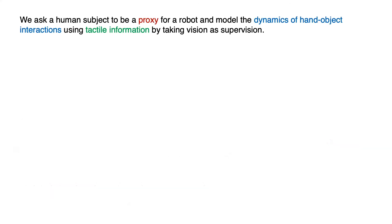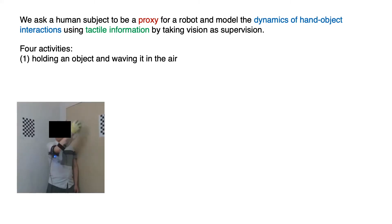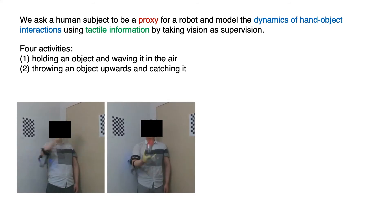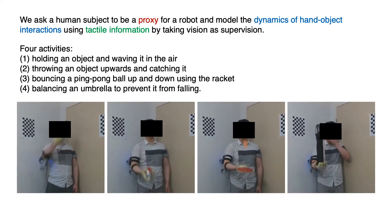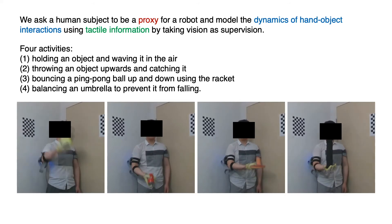We ask a human subject to be a proxy for robots and model the dynamics of hand-object interactions using tactile information by taking vision as supervision. We consider four different hand-object interactions including holding an object and waving it in the air, throwing an object upwards and catching it, bouncing a ping-pong ball up and down using the racket, and balancing an umbrella to prevent it from falling.